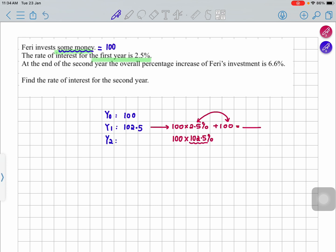Now what is happening in year 2? They are saying at the end of the second year, the overall percentage increment is 6.6%. What is the meaning of this overall percentage increment? It means you need to look from the start to what you're having now, the current. So I'm having an increment of 6.6%. Can you find what is this value now?